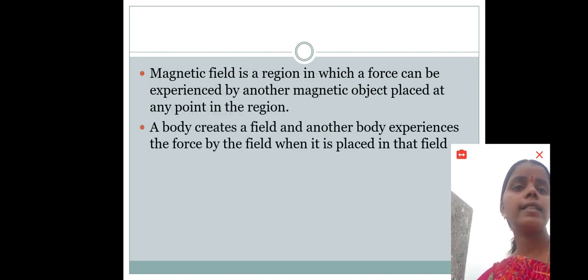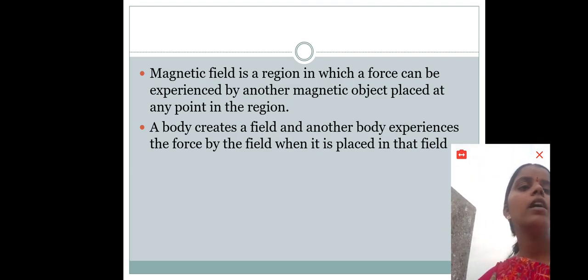See children, next, the magnetic field is a region in which a force can be experienced by another magnetic object placed at any point in the region. A body creates a field and another body experiences the force by the field when it is placed in that field.